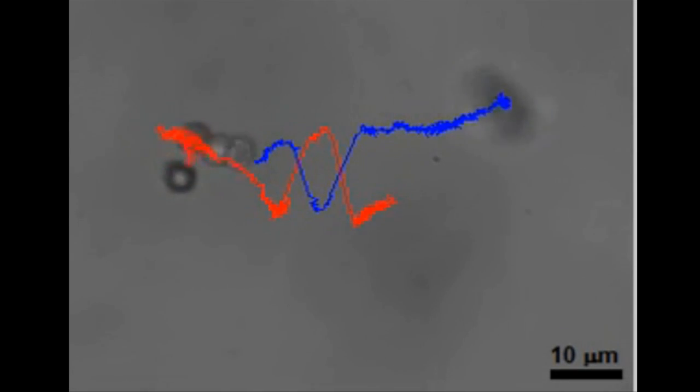Once flow is restored in the artery, the microswimmer chains could disperse and be used to deliver anticoagulant medication directly to the affected area to prevent future blockage.